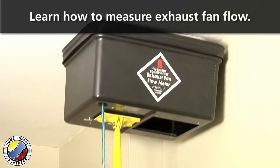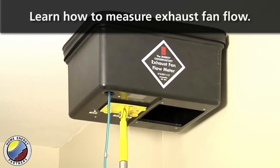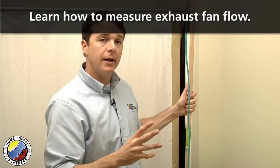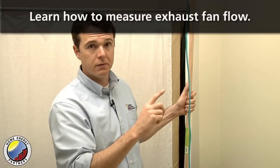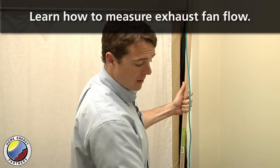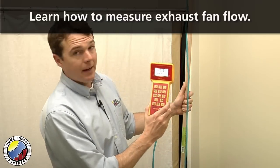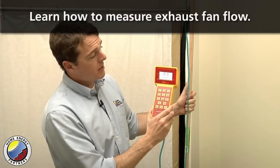At this point, all of the air that the fan is exhausting out of this bathroom is moving through the opening in the flow hood, so I can look at my gauge here and see that the pressure drop across that opening is 2.0 pascals.